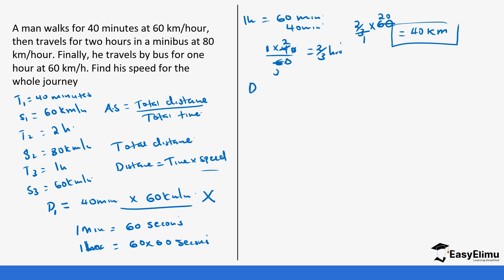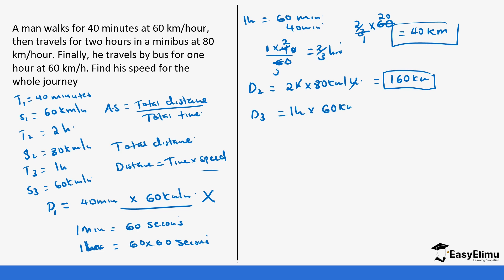Distance two = t2 × speed two = 2 hours × 80 km/h = 160 kilometers. Distance three = t3 × speed three = 1 hour × 60 km/h = 60 kilometers. The hours cancel, leaving the result in kilometers.